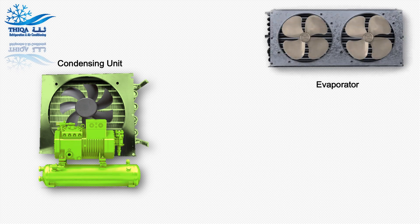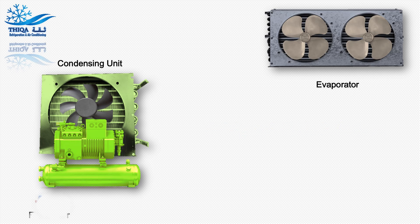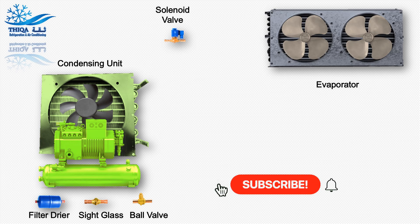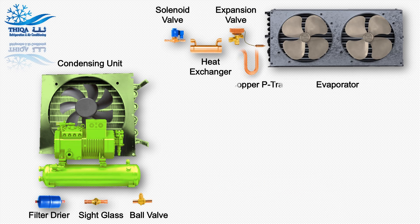Main mechanical parts: condensing unit, evaporator, safety and control devices, filter dryer, site glass, all valve, solenoid valve, heat exchanger, expansion valve, copper P-trap, and refrigeration piping.